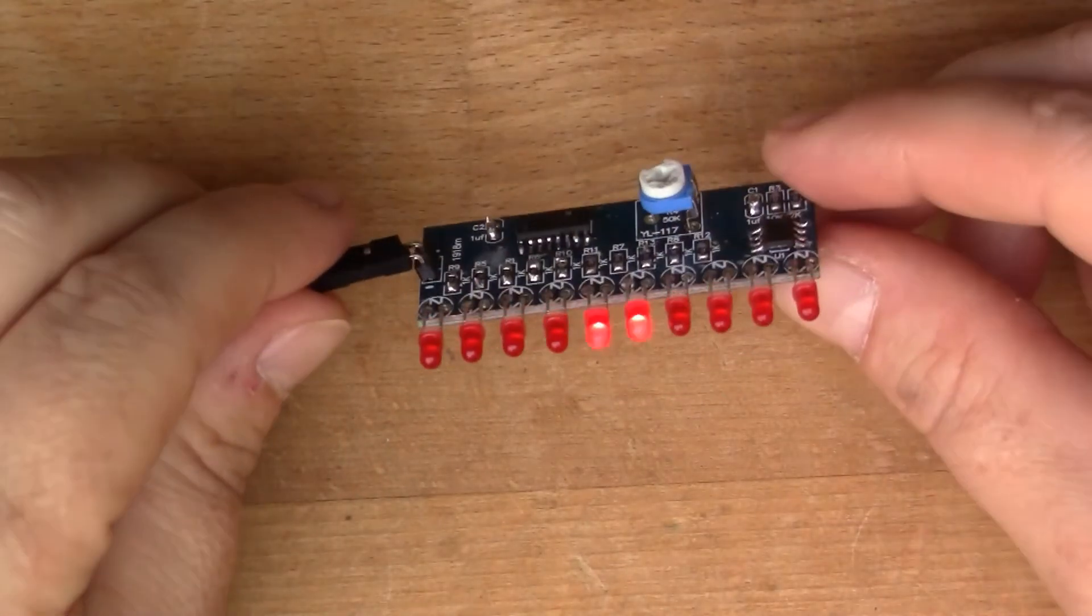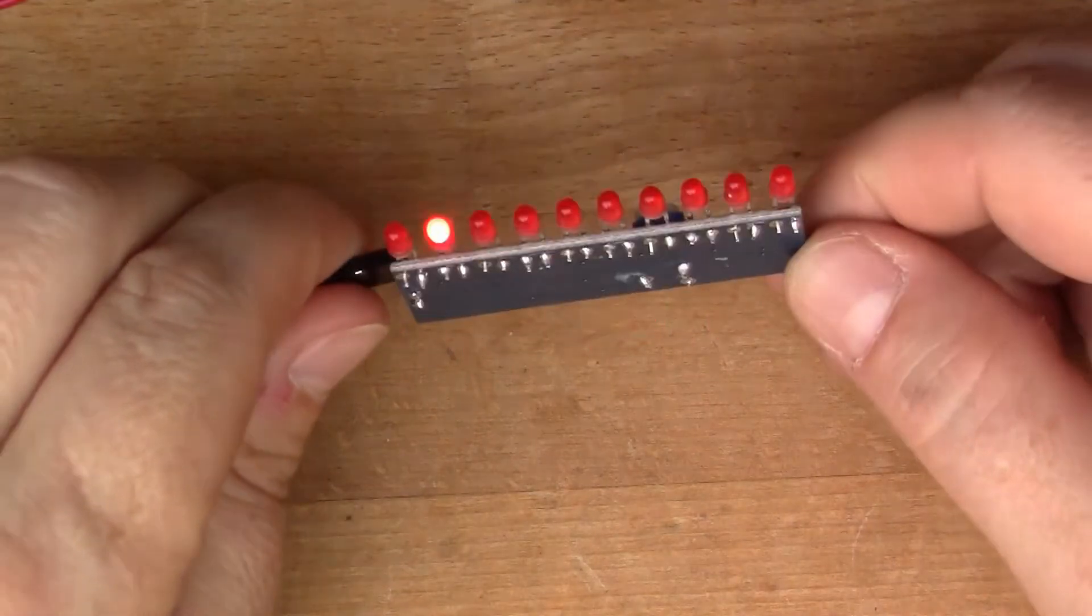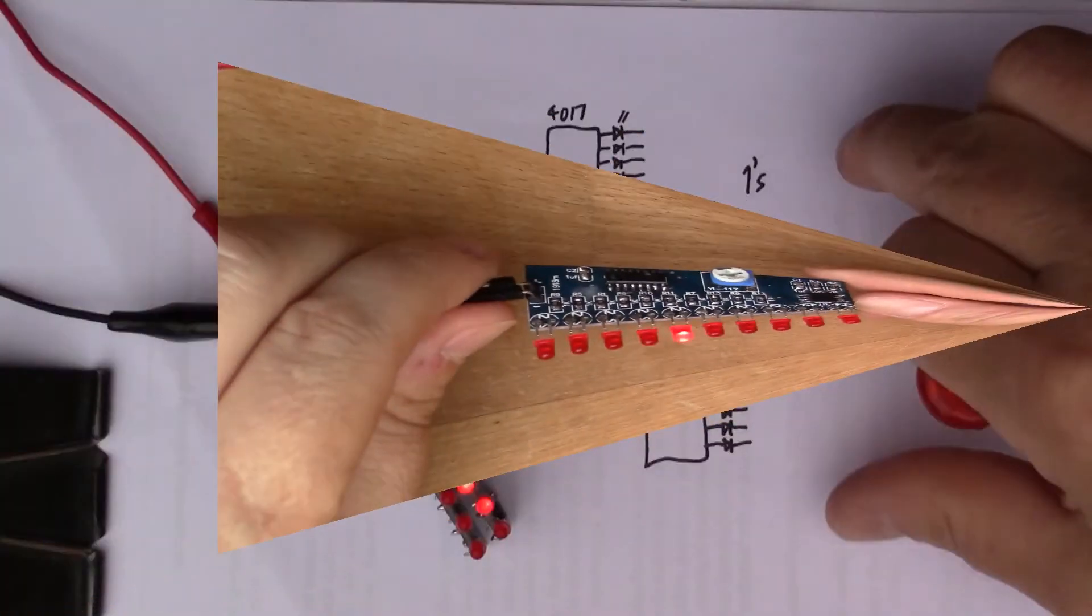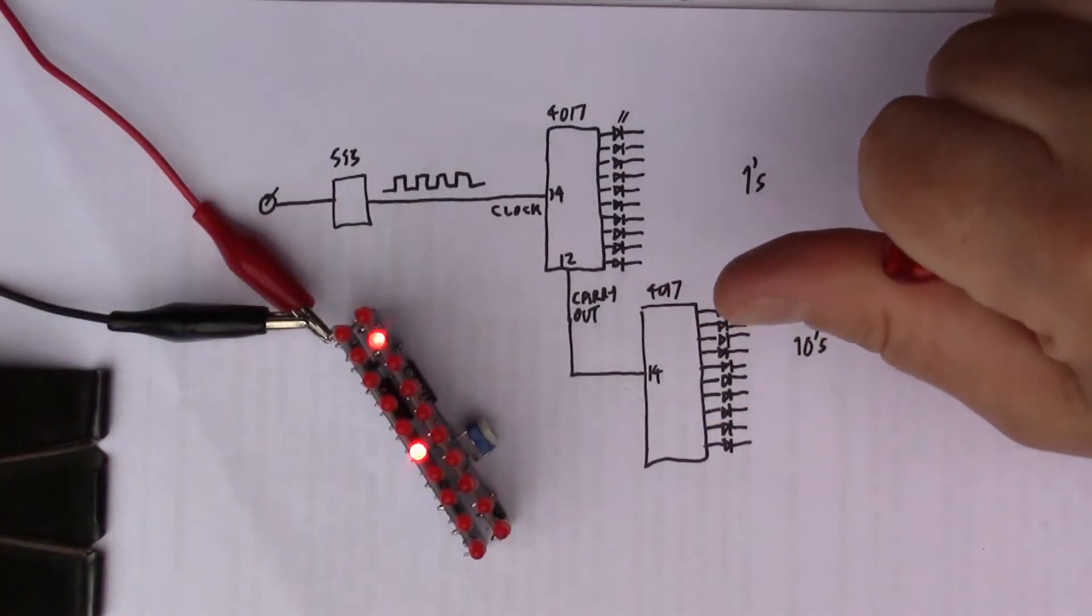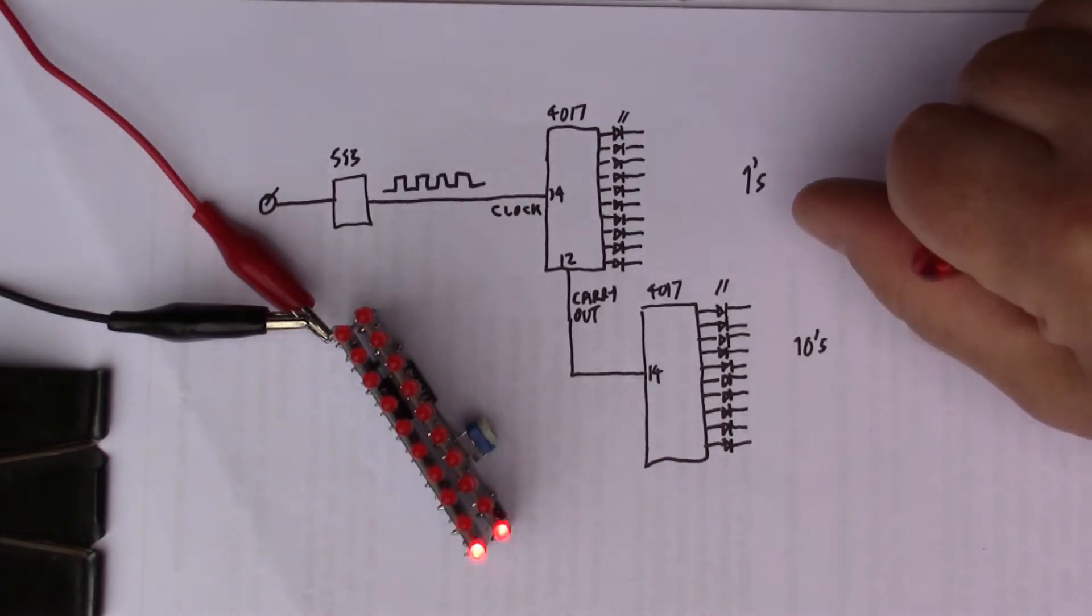A few weeks ago in episode 35 I built this Chinese LED chaser kit and then I modified it and made it into a two layer sandwich where the second layer was doing a divide by 10.